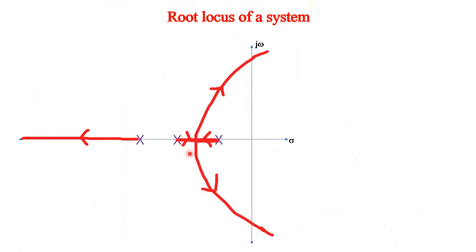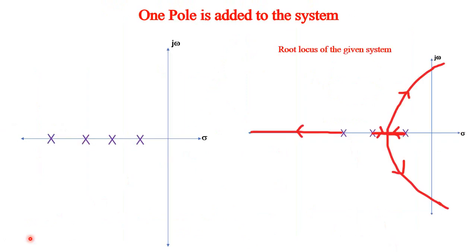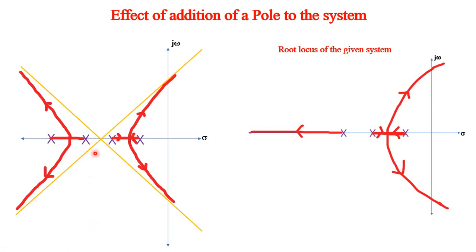Let us now consider an unstable system. Now there are three poles. I add one more pole to the system - to the left. When you have four poles and no zeros, the angle of asymptotes is (2q+1)×180°/4, where q = 0, 1, 2, 3. So you will have asymptotes at 45°, 135°, 225°, and 315°. We have seen such a problem with 4 poles in lecture 10.